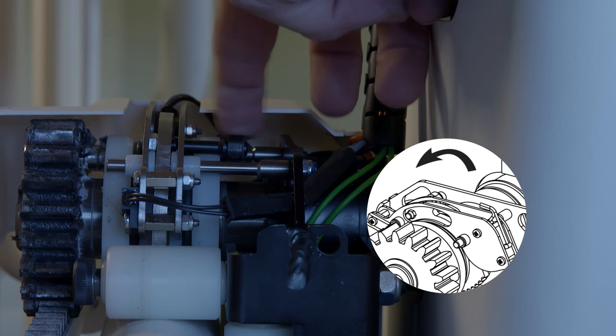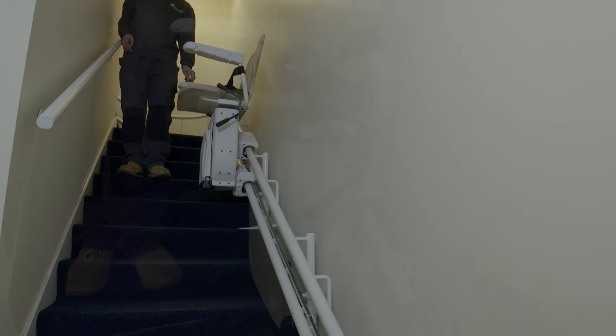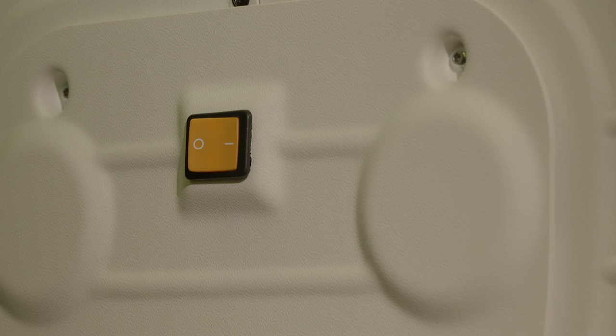Move the OSG arm into the neutral position. Then push the first and second PCB buttons. Then finally, reprogram the stairlift again by repeating the programming process.